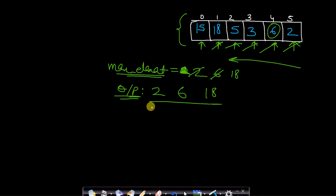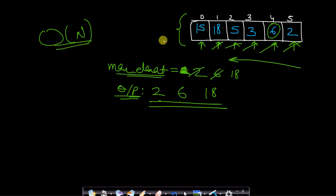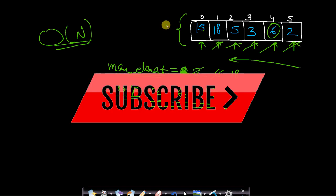Therefore the leaders are 2, 6, and 18. This approach only takes O(n) time because we are traversing the entire array only once from right to left. I hope this video was helpful. If you find any difficulty please comment below, like and share our video, and subscribe to our channel to watch more programming videos. See you in the next video. Thank you.